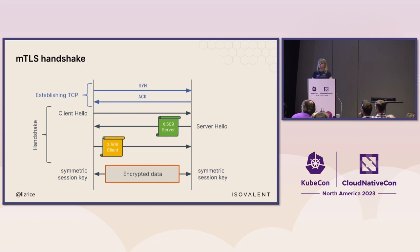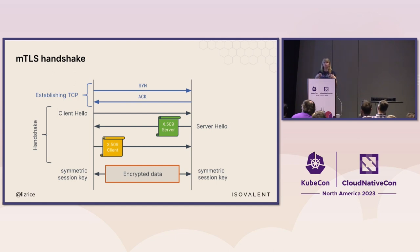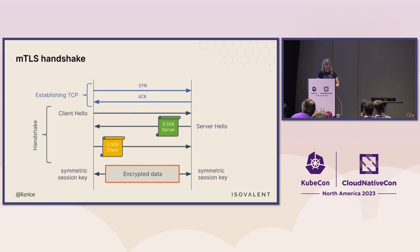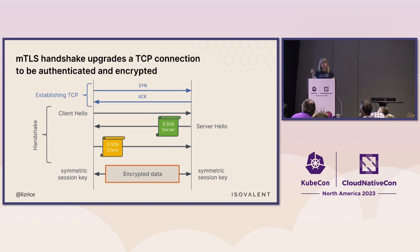In a cloud-native environment, we typically talk about mutual TLS between two workloads. When you're talking to your bank, you do TLS to establish it's the bank, and then you use some other authentication method like a username and password. In a Kubernetes cluster, two peer workloads can exchange certificates issued by a common certificate authority that they both trust. The mutual TLS handshake is very similar — we just have an additional certificate flowing and being validated. So mutual TLS starts with TCP, upgrades it to be authenticated, and then uses that TCP connection for encrypted data.